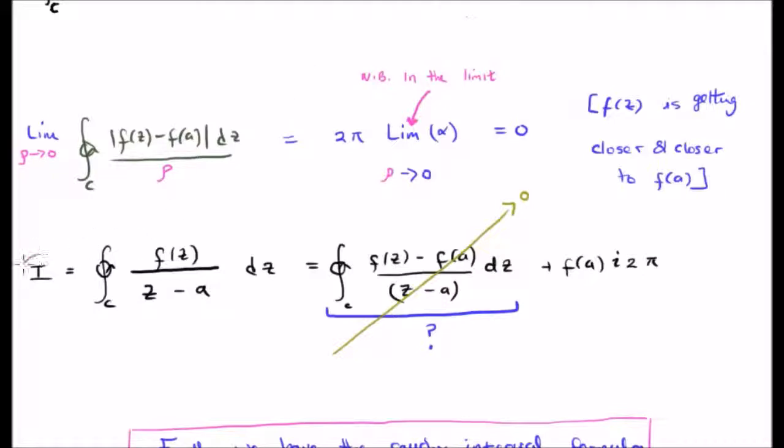Going back to our original integral capital I, we see that I2 is going to zero and we're simply left with twice pi times f of a.